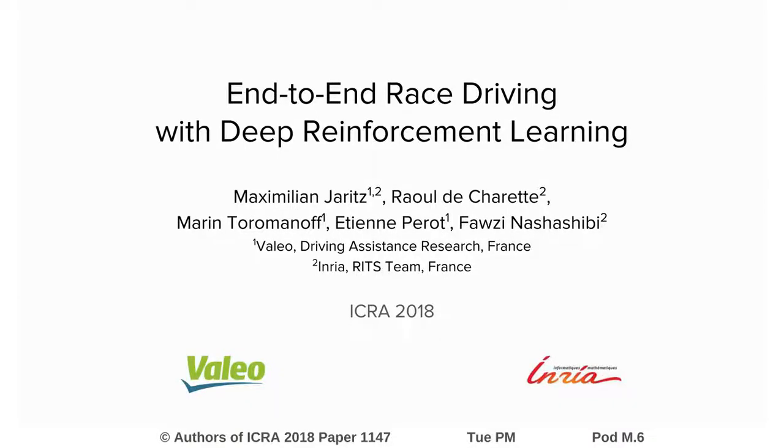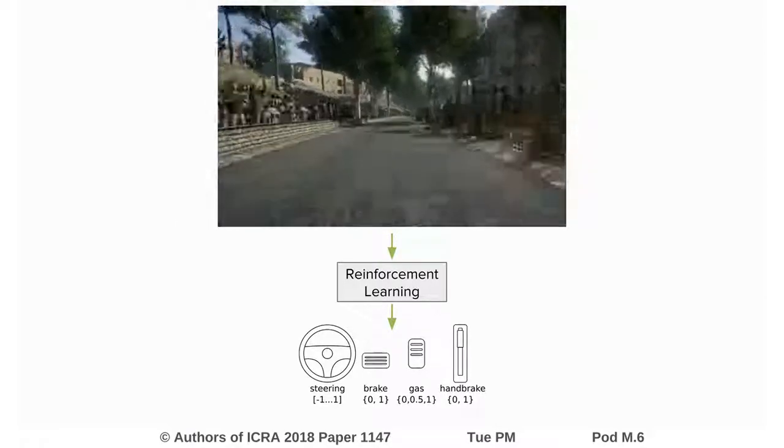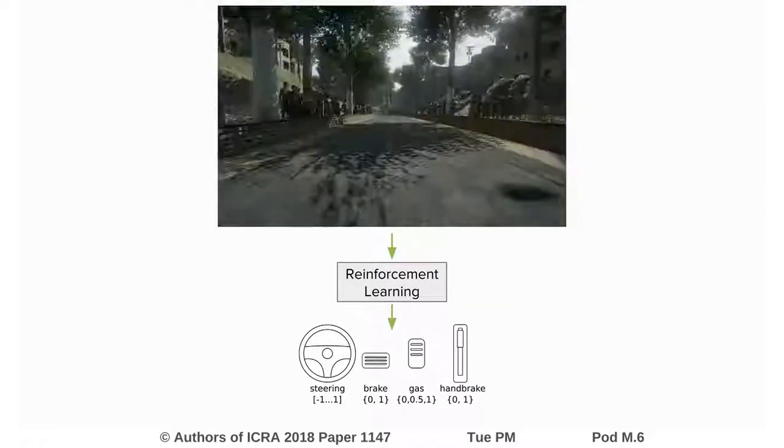Welcome to the video of our ICRA paper on end-to-end race driving with deep reinforcement learning. We present an end-to-end driving method to predict low-level control directly from image pixels.